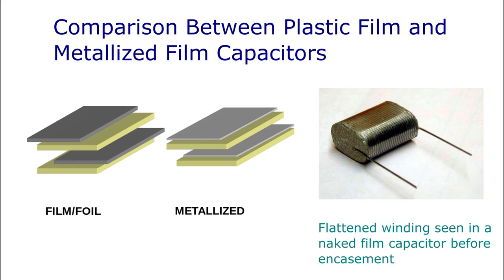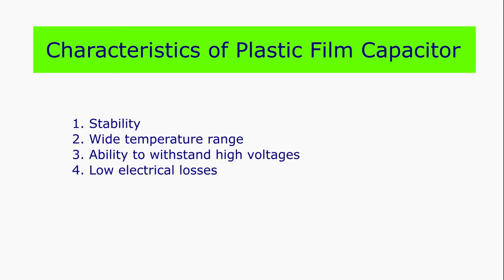Metallized film capacitors are made of two metalized films with plastic film as the dielectric. A very thin aluminum metallization is applied to one or both sides to serve as the electrode. This construction has self-healing properties and there is less destruction of the component due to dielectric breakdown. The disadvantage is that the surge current rating is limited. Film capacitors have the ability to choose different film materials for the dielectric layer to select desirable electrical properties such as stability, wide temperature range, and ability to withstand high voltages.